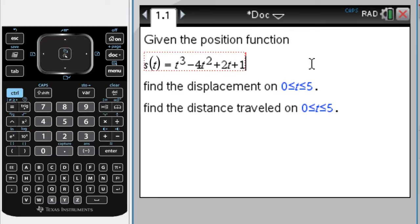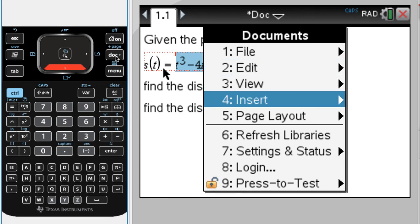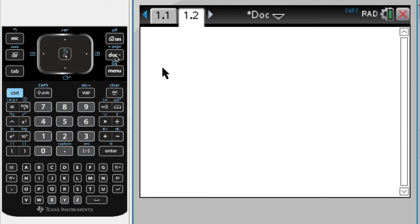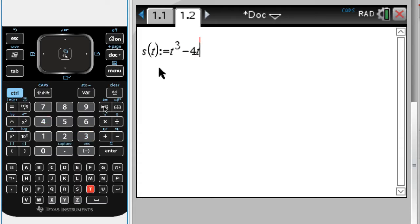To make my life easier, I'm going to copy this so I can use it in the calculator page. I'm going to insert a doc and then insert a calculator page and define the function. So s parenthesis t and then colon equals, so that's control and the template. I'm going to paste, didn't work, all right, so t cubed minus 4t squared plus 2t plus 1. I'm going to press enter and it should say done.